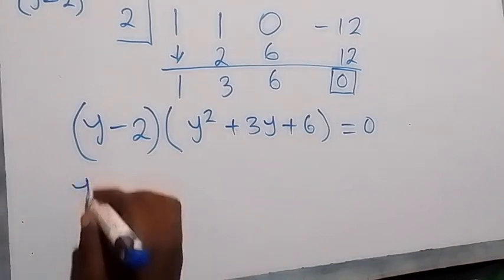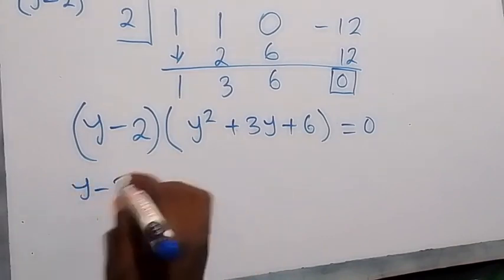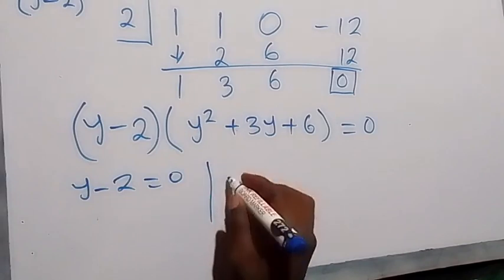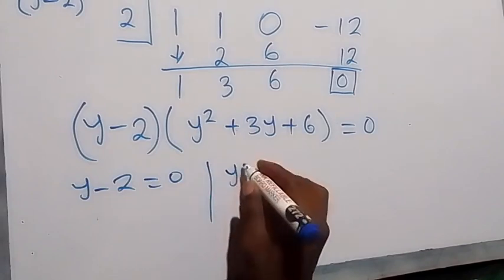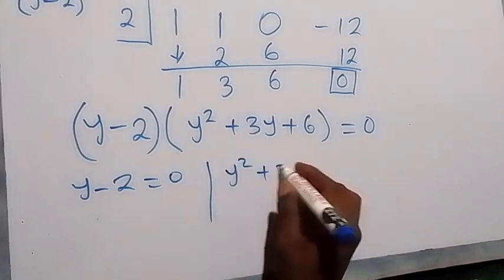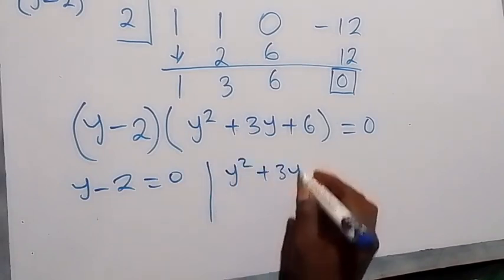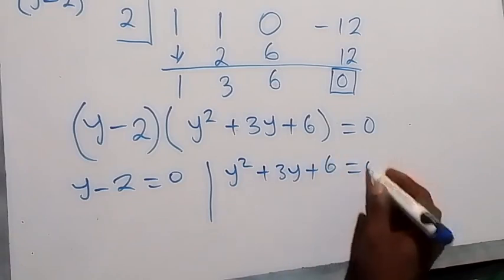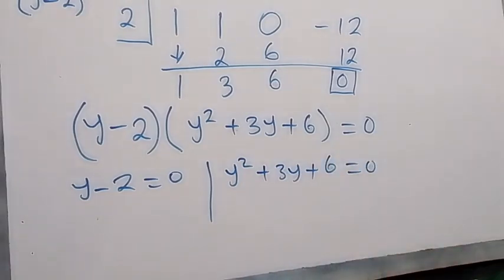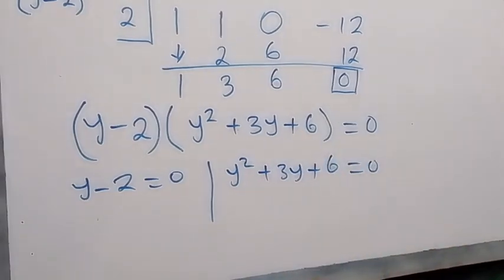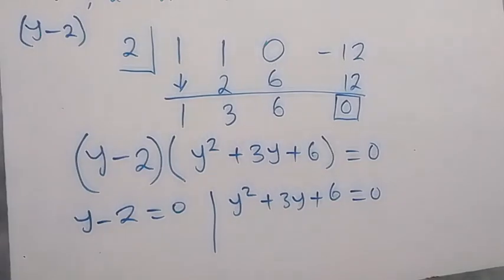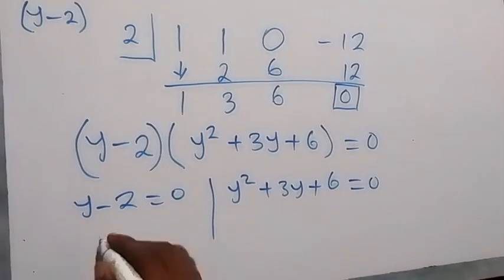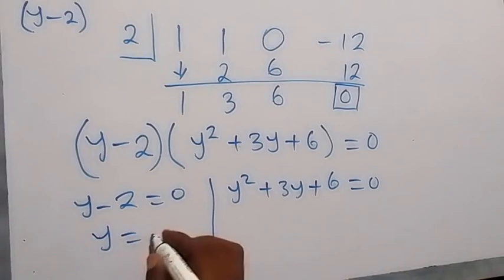So we have two cases: y minus 2 equals 0, or y squared plus 3y plus 6 equals 0. From the first case, y equals 2.